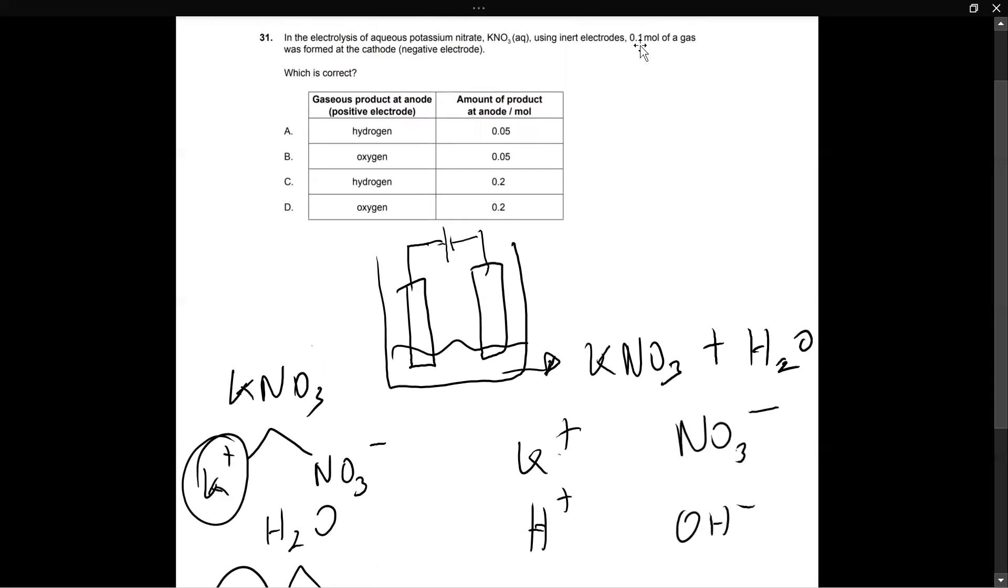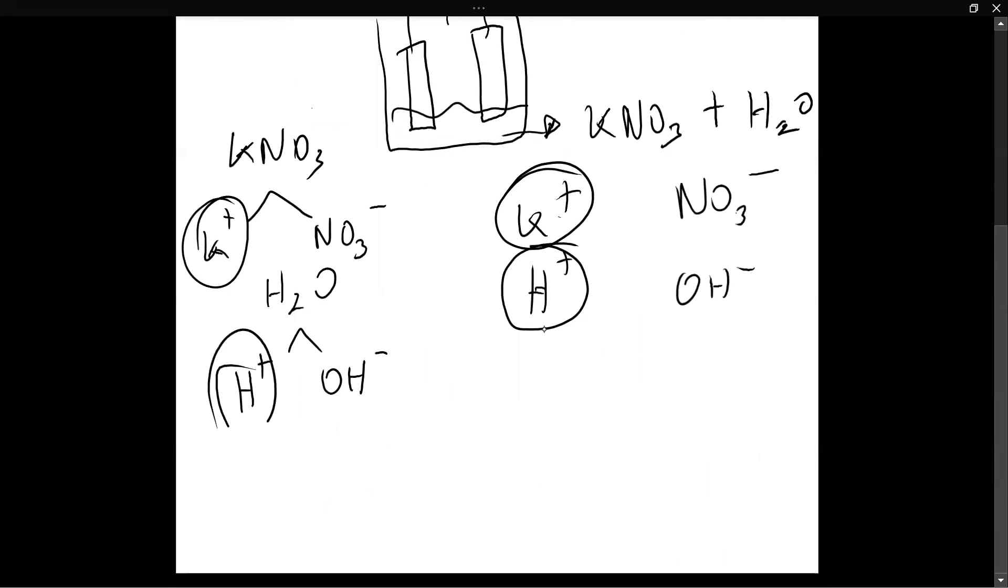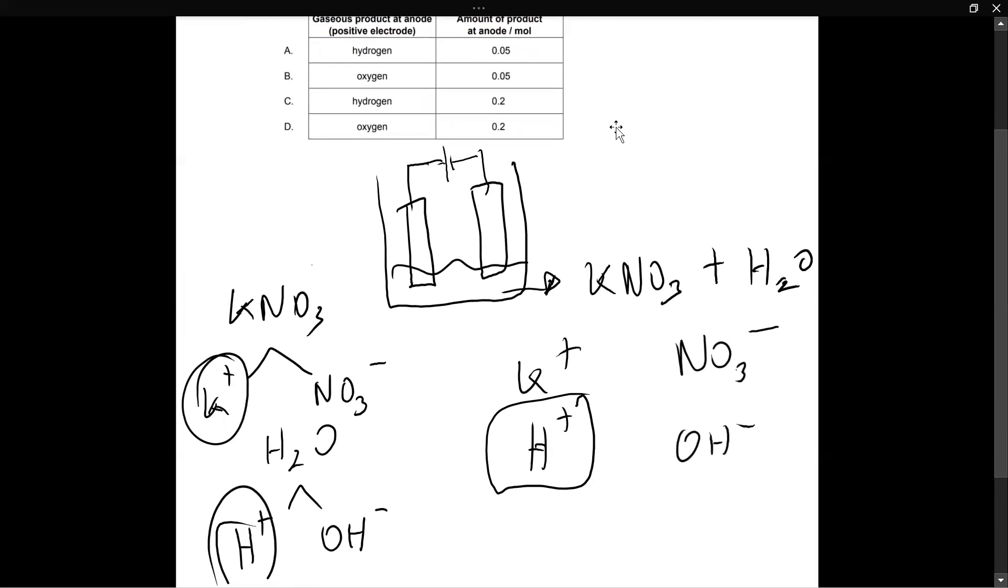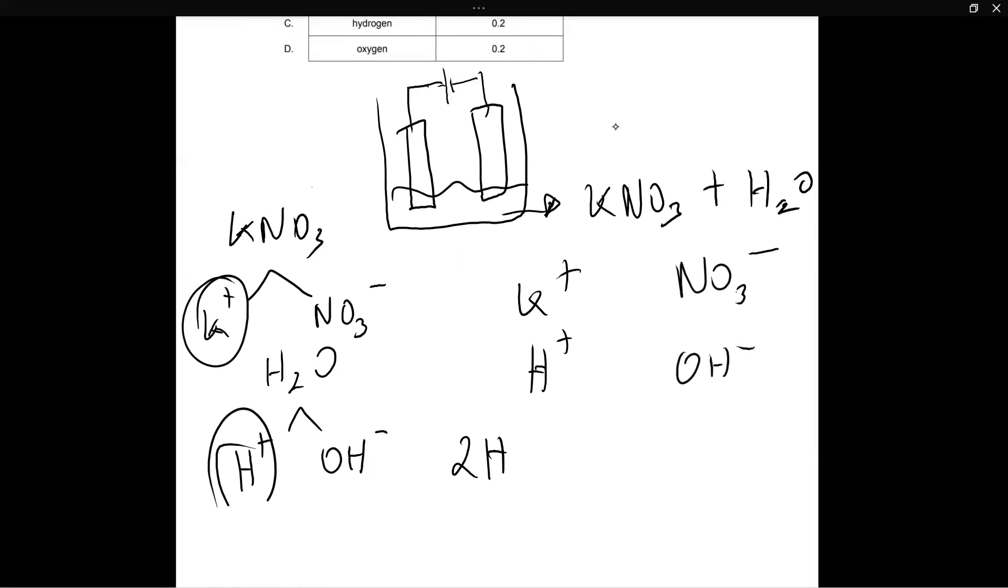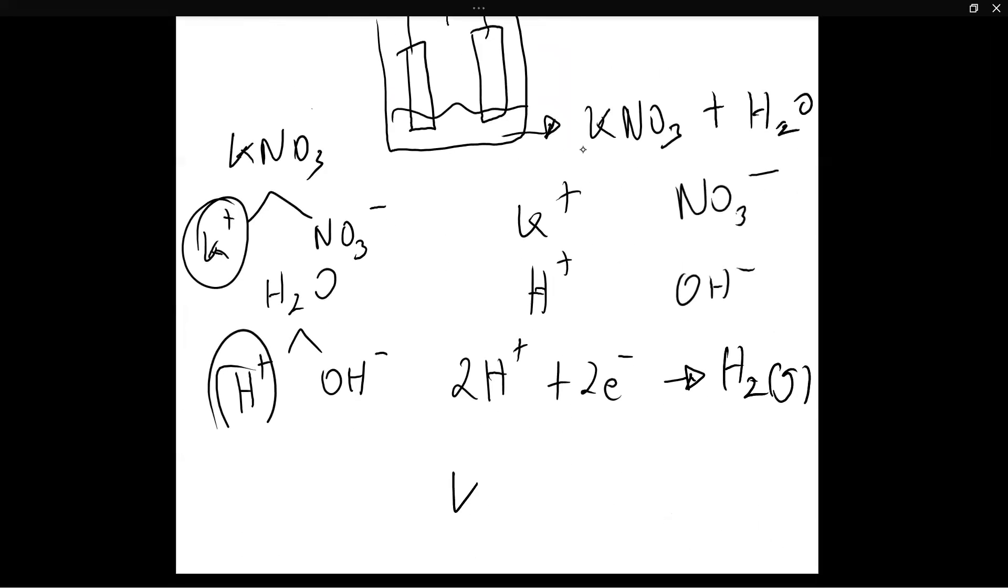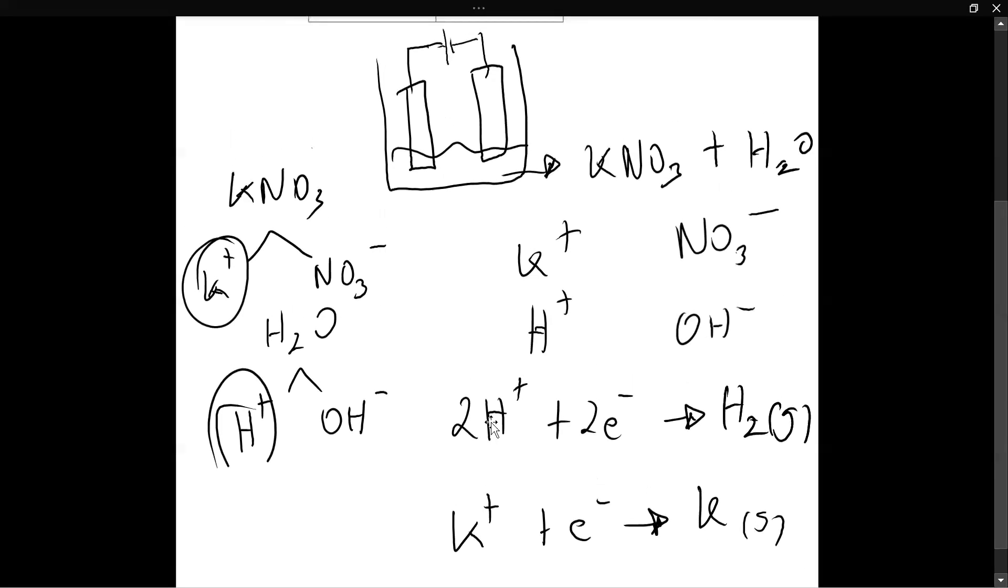So they've already told us in the question that 0.1 mole of a gas was formed at the cathode. So the cathode is where this reaction is going to take place. And from this, you can probably guess that H plus is going to be reduced because they've told us that a gas has been formed. And that only means that hydrogen was reduced. And by the chemical reaction, what I mean is that 2H plus gained two electrons to form H2 gas. Well, why wasn't it K plus? Because if K plus did get reduced, its reaction would look something like this. And this would not be gaseous, it would be solid.